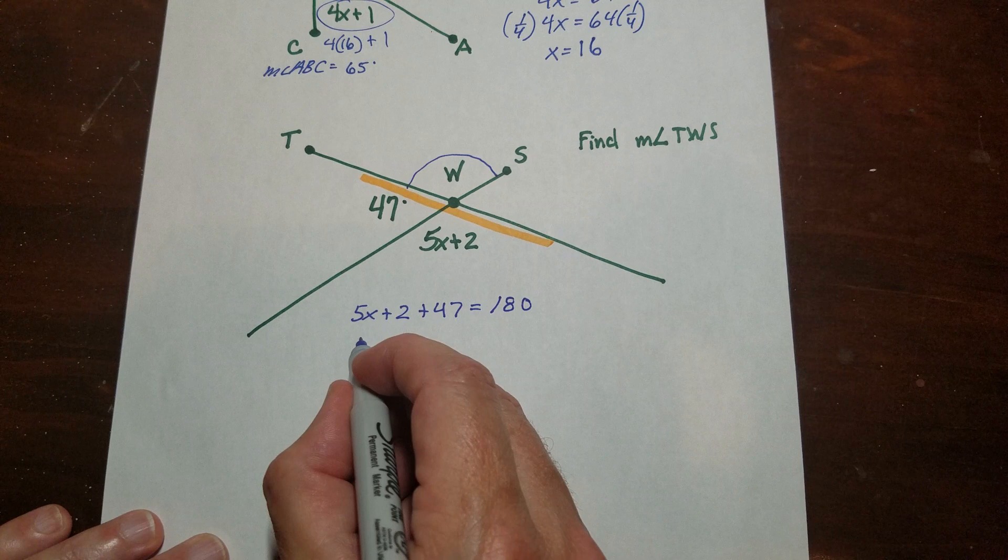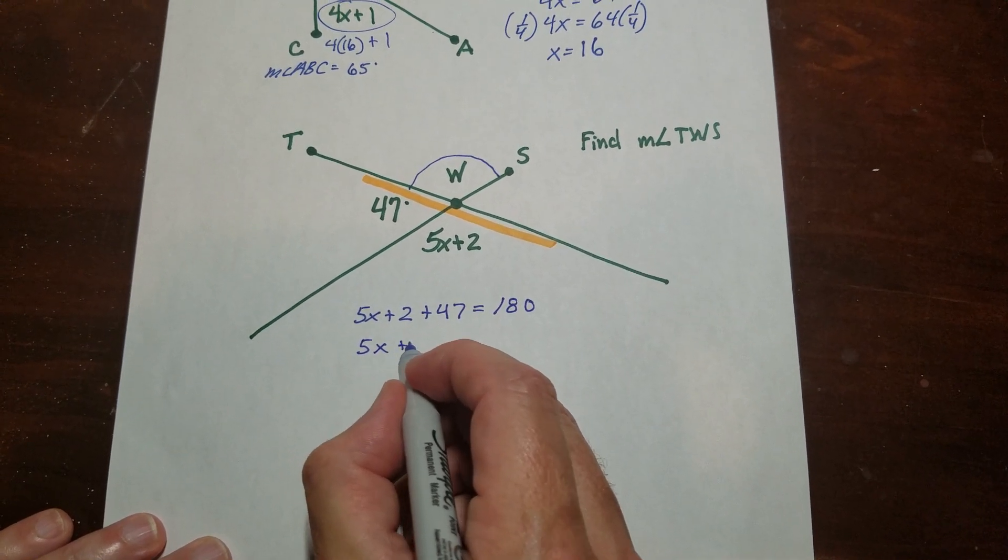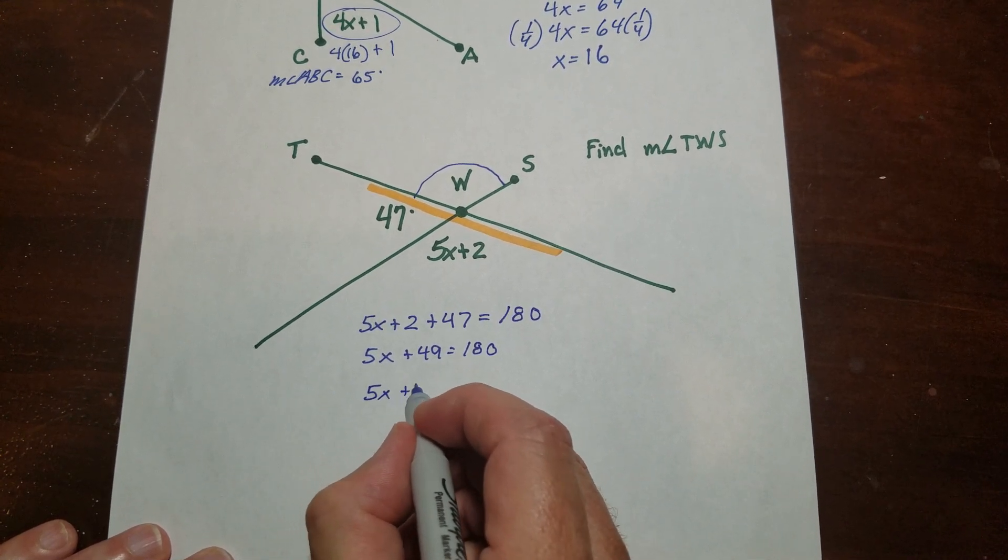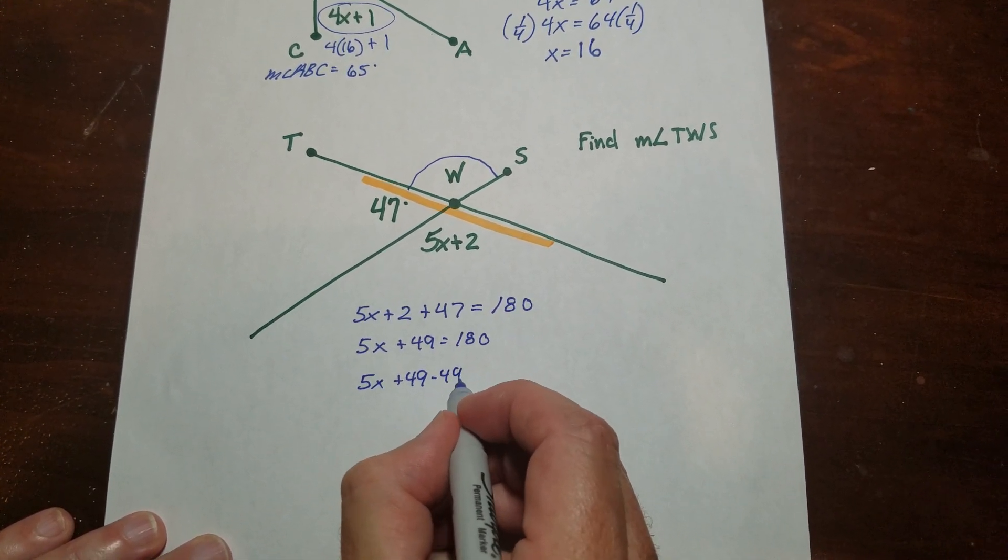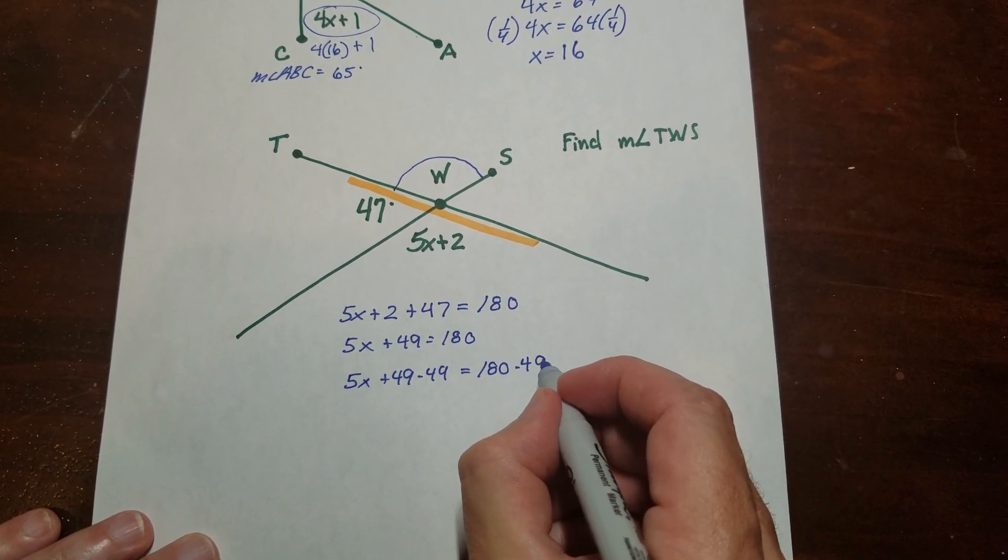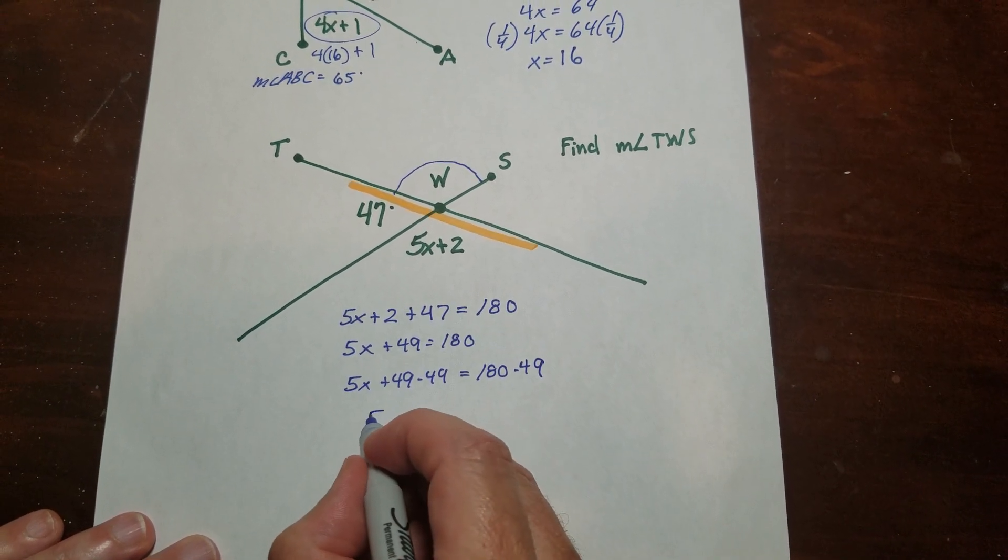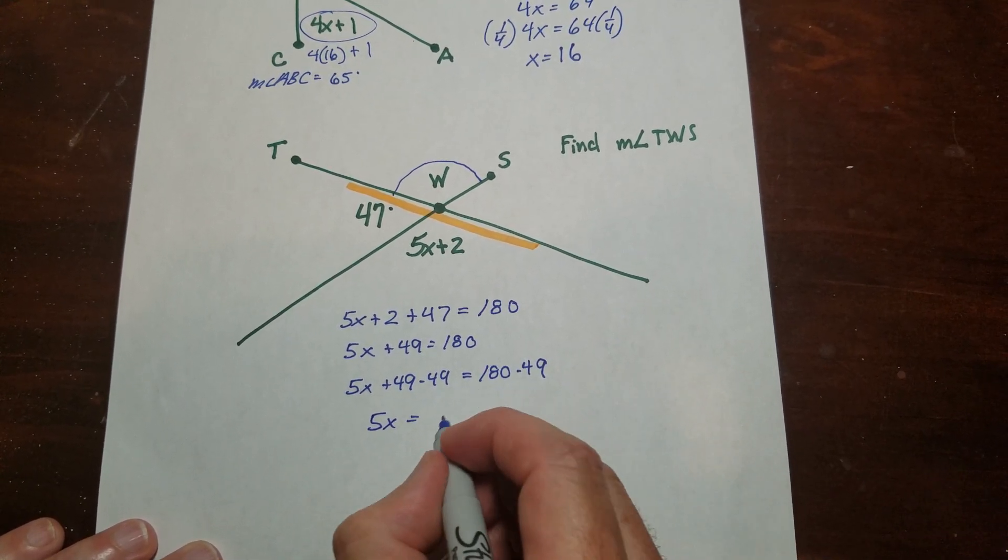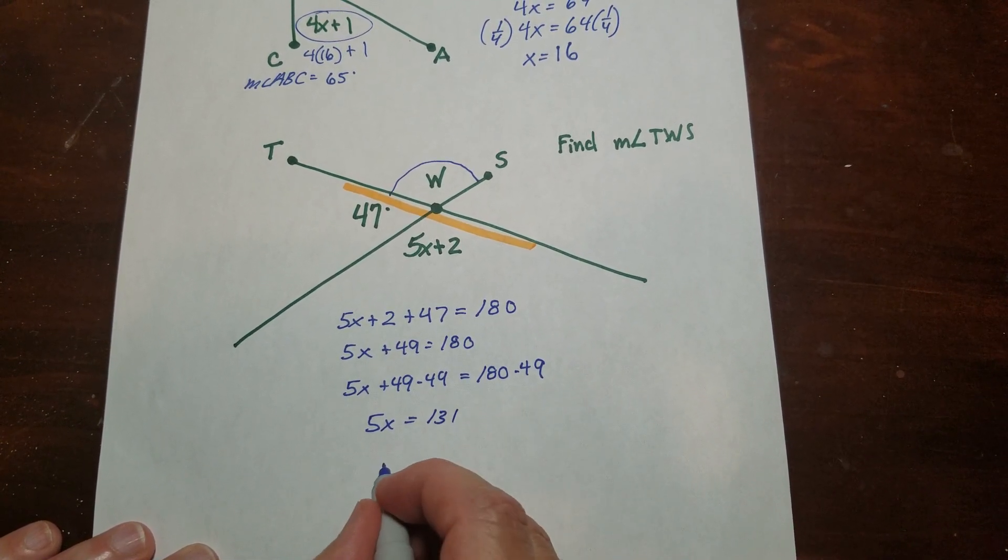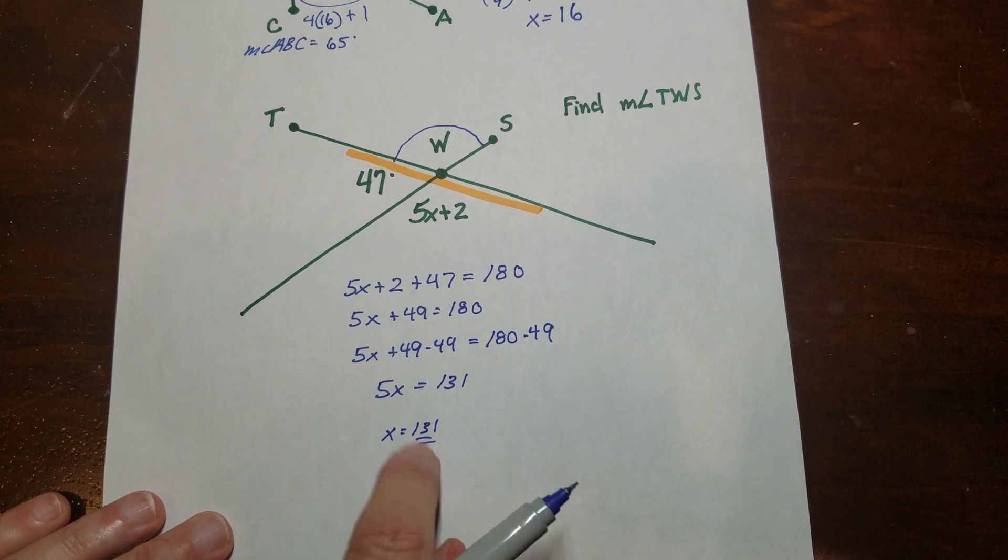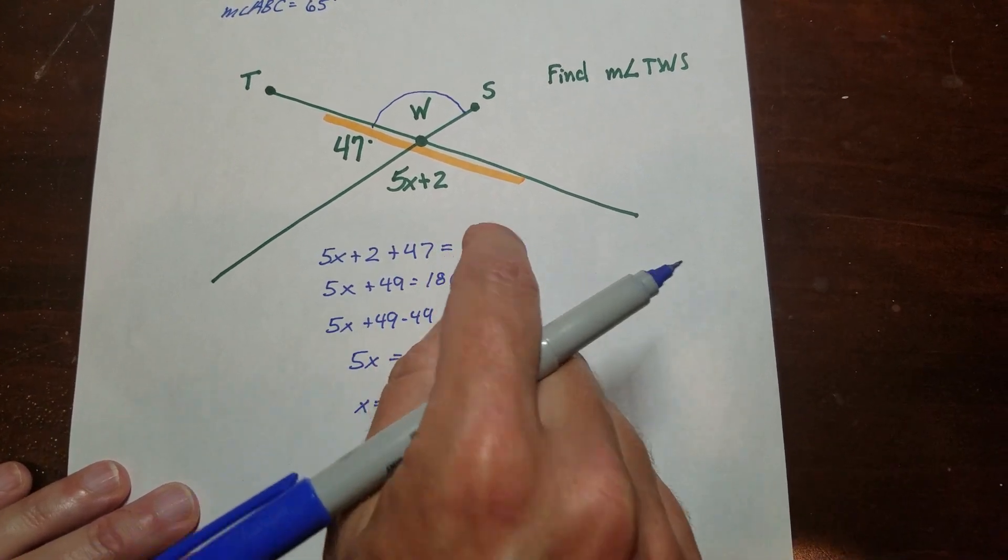So I'm going to add these up here. Then I'm going to subtract that 49. I can already tell I'm going to get a fraction, but that's okay. All right, so I get 5x, and then that would be 140, 131. And if I divide that, I could leave it like this. That'd be fine. So I know that x is equal to 131 over 5.